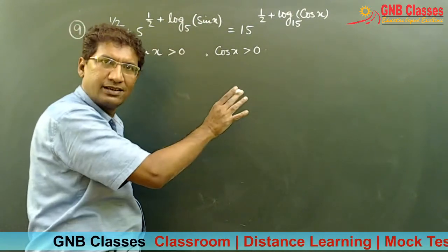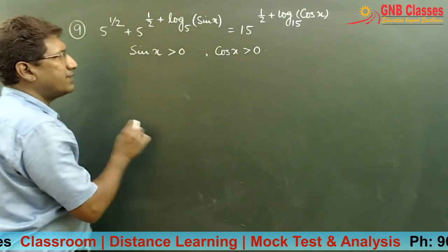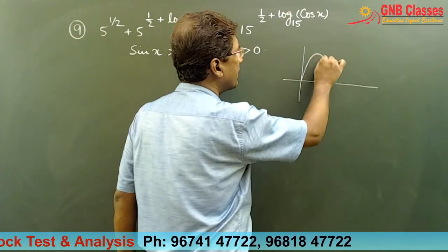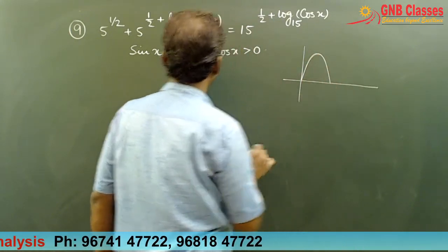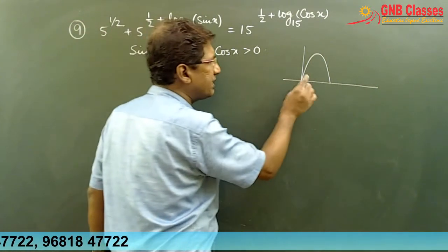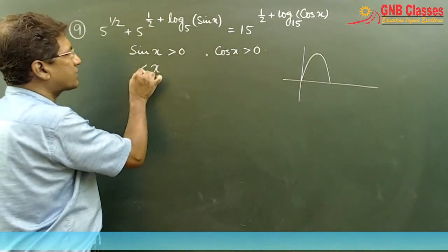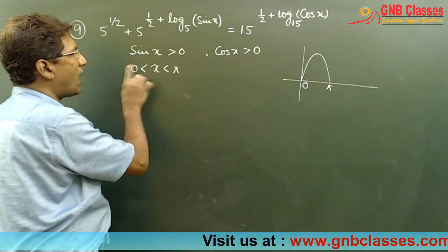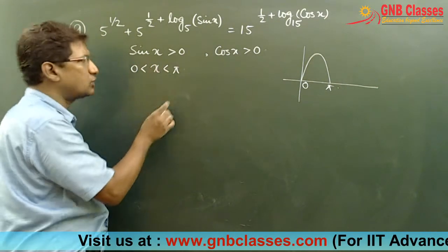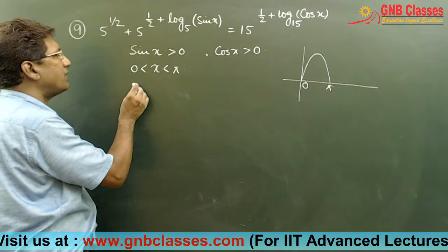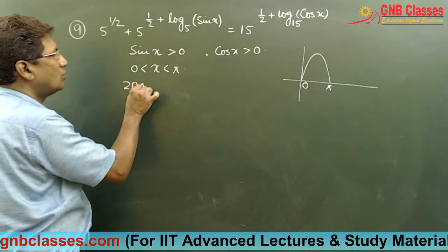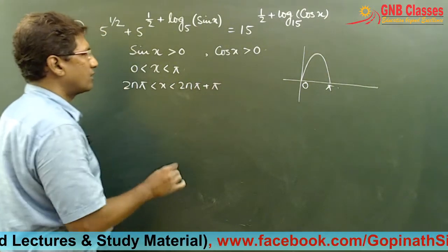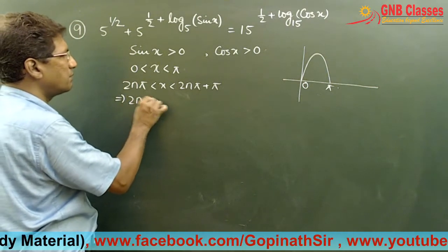Since sin x is greater than zero, from the trigonometric inequality, nearby the origin we can write that x is greater than zero and less than π. Adding the period of sin x, which is 2π, we get 2nπ less than x less than 2nπ plus π.